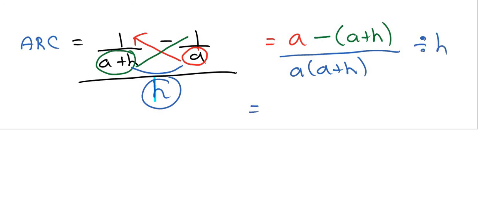If I distribute this minus sign, you should see that this a and that a cancel off, so you're left with negative h. So you're left with negative h on the numerator all divided by a times a plus h. Now instead of writing divide by h, I can change that to—well that's really divide by h over 1.